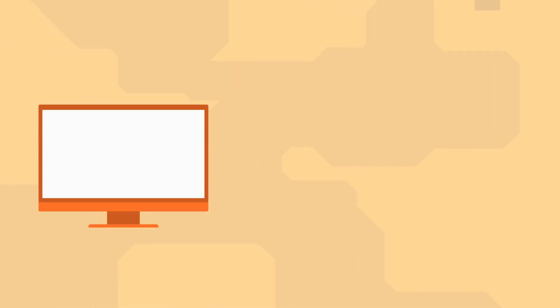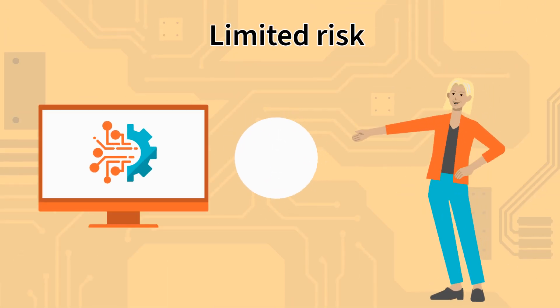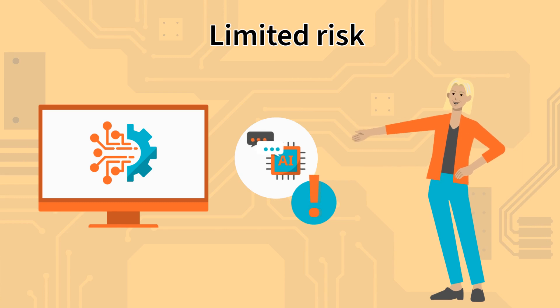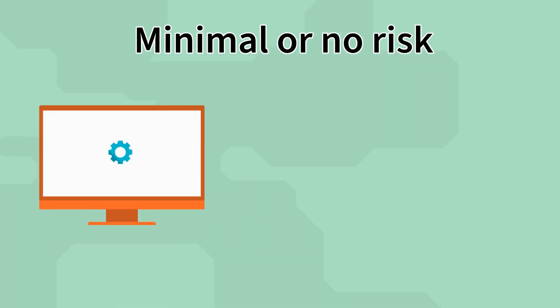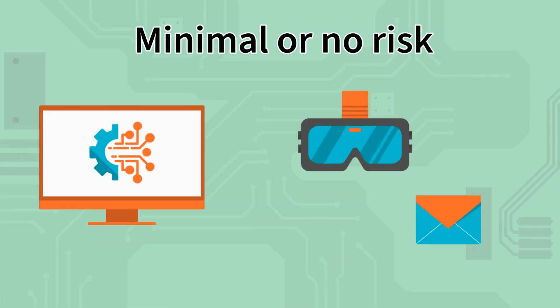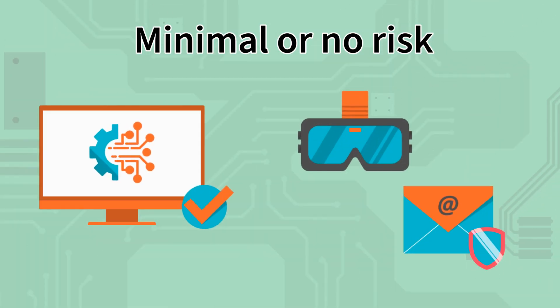Systems such as chatbots need to be transparent that they are artificial intelligence, so that users can make informed decisions. Low-risk applications such as video games or spam filters are unrestricted and subject to no specific requirements.